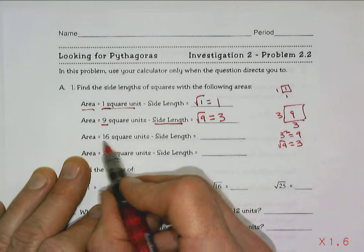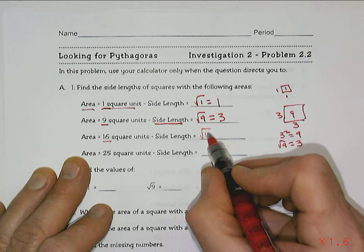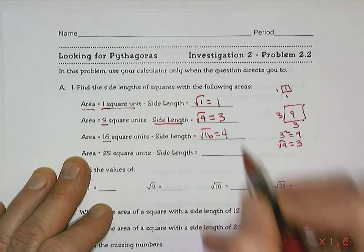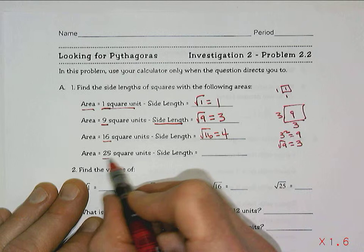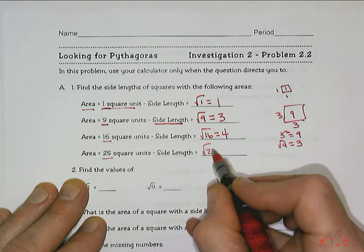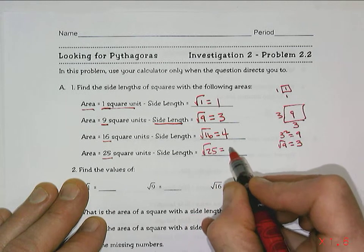If the area is 16, the side length is the square root of 16, which is 4. 4 squared is 16. If the area is 25, the side length is the square root of 25, which is 5.